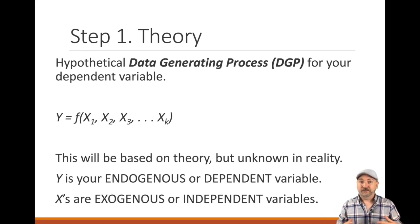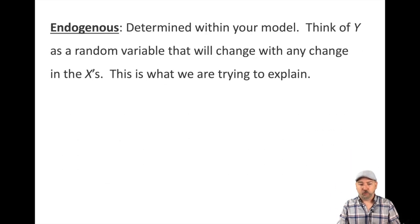This is based on theory, but we never really know what that true data generation process is. This is what we might call faith-based econometrics. We have to believe that there is a fixed function and a fixed set of variables that determines our outcome. One way to think about our goal is we want to get as close to that function as possible. That's our step number one theory, our data generation process.